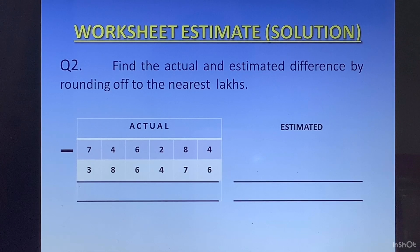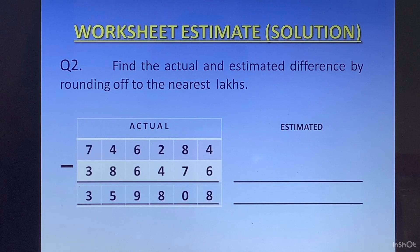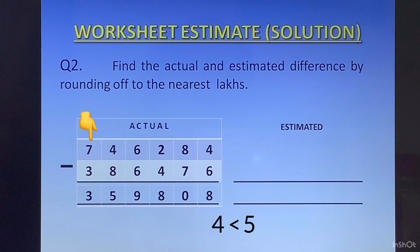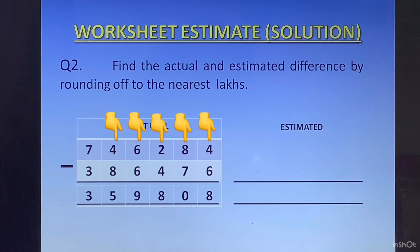Question 2: Find the actual and the estimated difference by rounding off to the nearest lakhs. The actual difference is 359808. Now let us look at the first number, 746284. To round off to the nearest lakhs place, we will look at the 10,000 place in this number, which is 4. Since 4 is less than 5, we will not change the digit at the lakhs place, and all the digits after the lakhs place on the right will get converted to 0. We will get 7 lakhs.